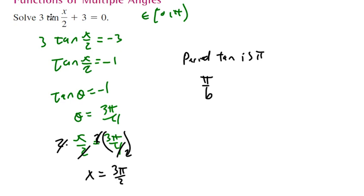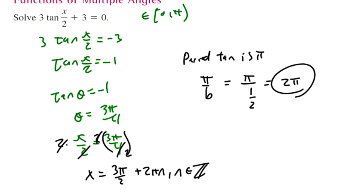For tangent, it's π over b. For sine or cosine, it would be 2π over b. What's b? The coefficient of x is 1/2. So the period of this specific tangent function is 2π. That's important because we add 2πn to our solution, where n is an integer.